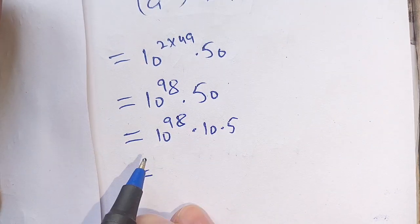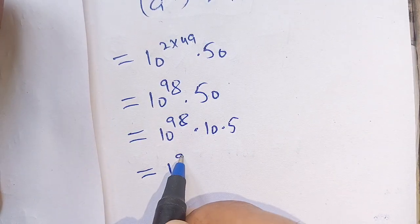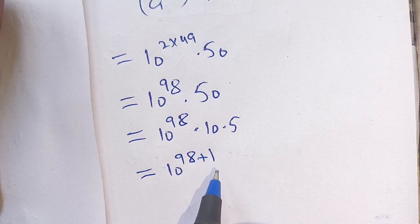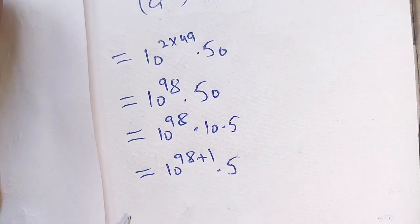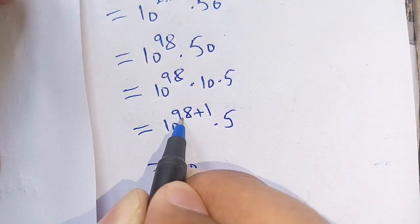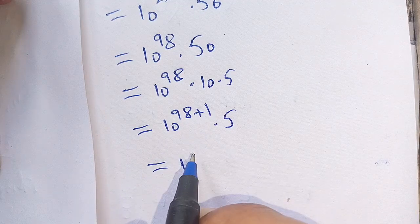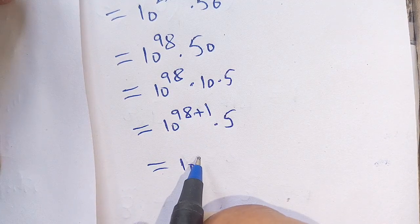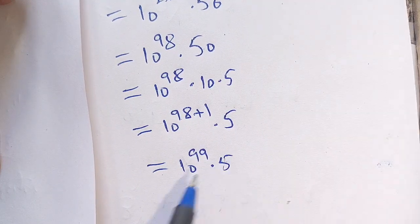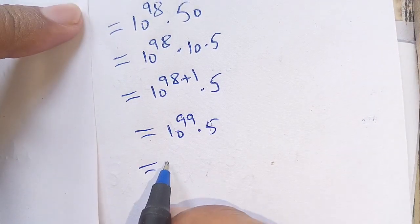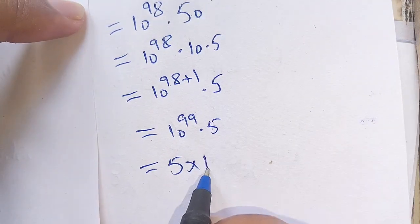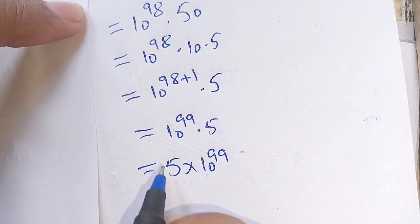We can write this as 10 raise to power 98 plus 1 times 5. Now 98 plus 1 becomes 99, so we get 10 raise to power 99 times 5. Thus the final answer is 5 times 10 raise to power 99.